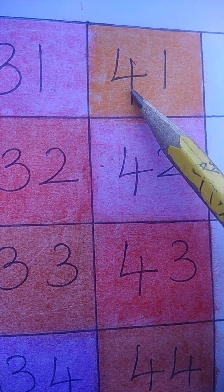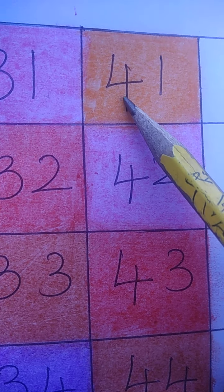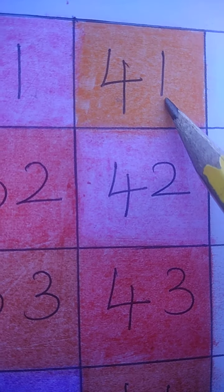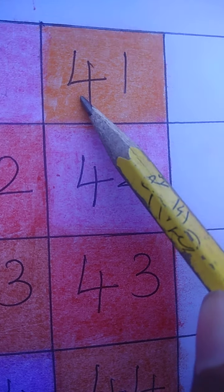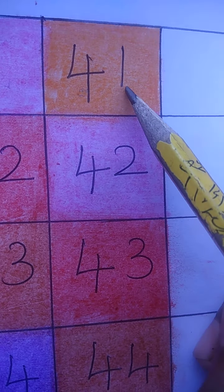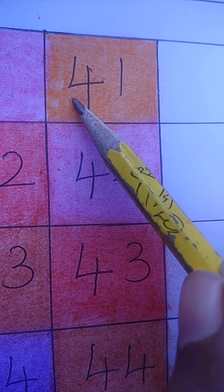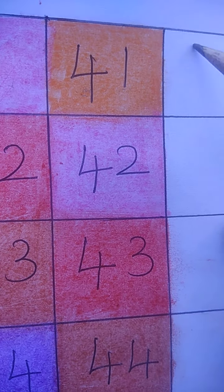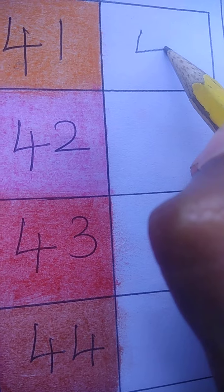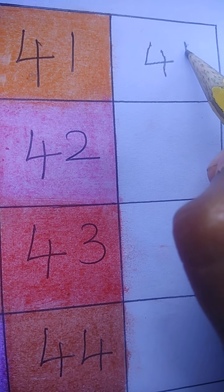What is it? What is it? Yes, this is 4 and this is 1. So 4 1 41. What is it? 41. We have to write 4 then 1.